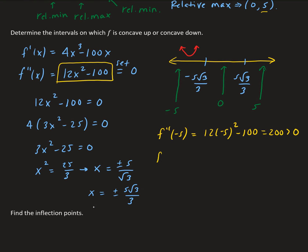Plugging in f double prime of 0 gives us 12 times 0 squared minus 100, which equals negative 100 — less than zero. So the function is concave down between negative 5 root 3 over 3 and positive 5 root 3 over 3. Then f double prime of 5 gives us 12 times 25 minus 100, which equals 200, bigger than zero. So the function is concave up from 5 root 3 over 3 to infinity.